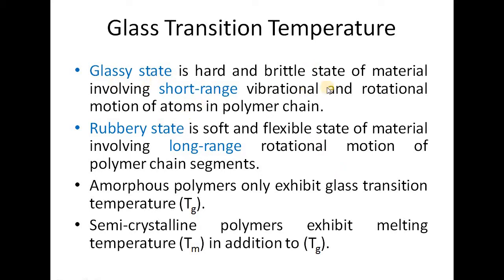These are the various characteristics which differentiate the glassy state and rubbery state. In the glassy state, we have short-range vibrational and rotational motions of atoms in the polymeric chains. Whereas in the rubbery state, we have long-range rotational motion of polymeric chain segments. As a result, the glassy state is a hard and brittle state, whereas the rubbery state is a soft and flexible state of the material.